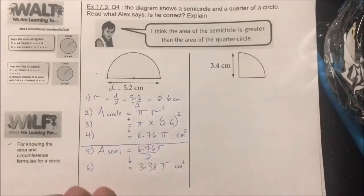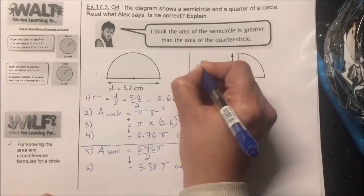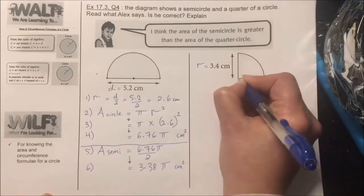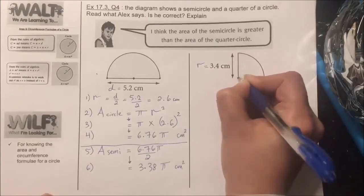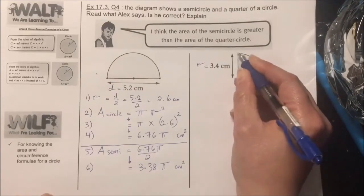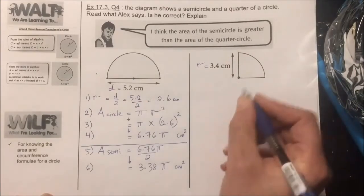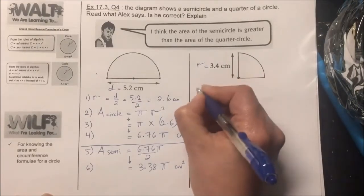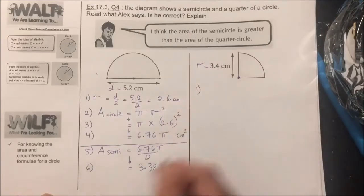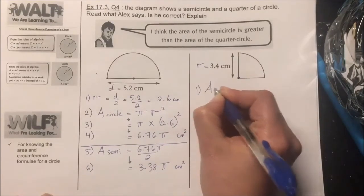Now for the quadrant: 3.4 represents the radius, which is the distance from the center to the circumference. In step one, I will start by writing the general formula for the area of a full circle.